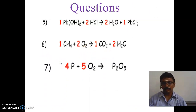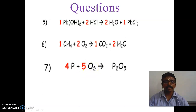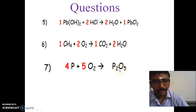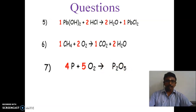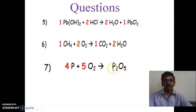Next is the seventh equation involving P and P2O5 - phosphorus pentoxide. Phosphorus has 4 atoms on the left side, but in P2O5 there are only 2 atoms. So the equation is not balanced.